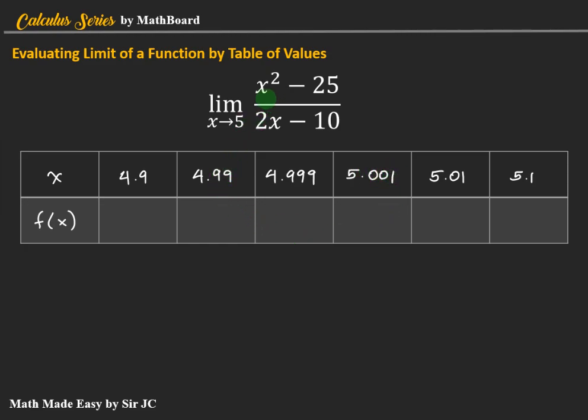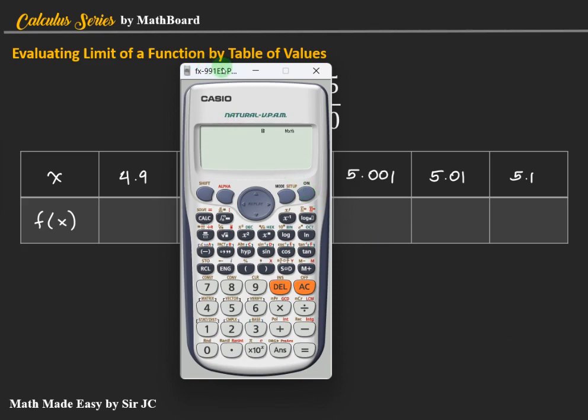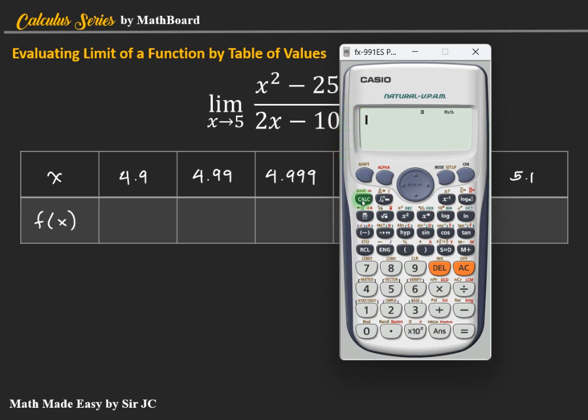We just evaluate the function using these values of x. We use the calculator, so we enter first the function, x squared minus 25 divided by 2x minus 10. Then we use the calculate function. Let's press calc, then x is 4.9 equals, so the result is 4.95.